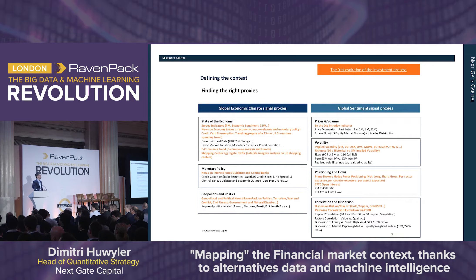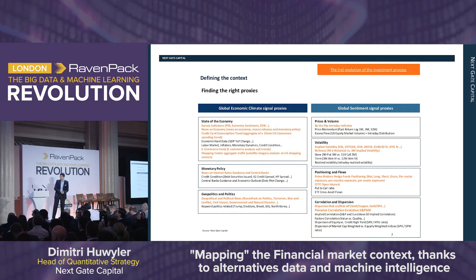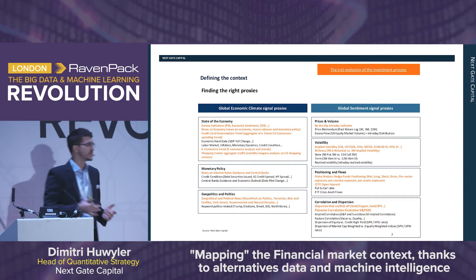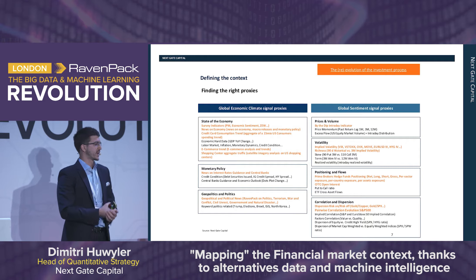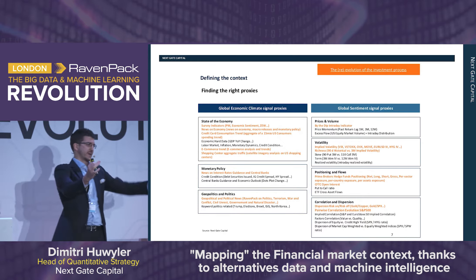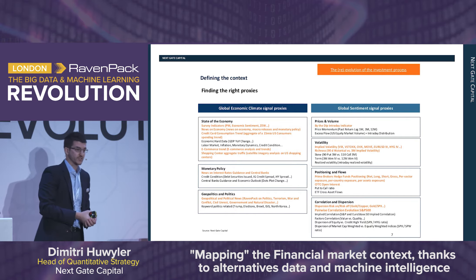This is the key step where alternative data and machine learning play a key role. They help us find more granular, uncorrelated, higher-frequency, quantifiable signals that allow us to build proxies for our context indicators. For example, looking at the state of the economy, we can now access real-time news sentiment by entity or sector, almost real-time information about e-commerce trends, and real-time credit card consumption trends and flows data.